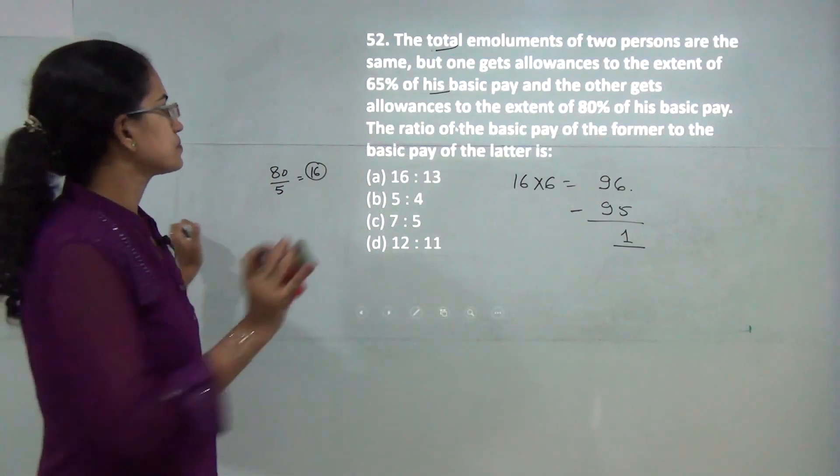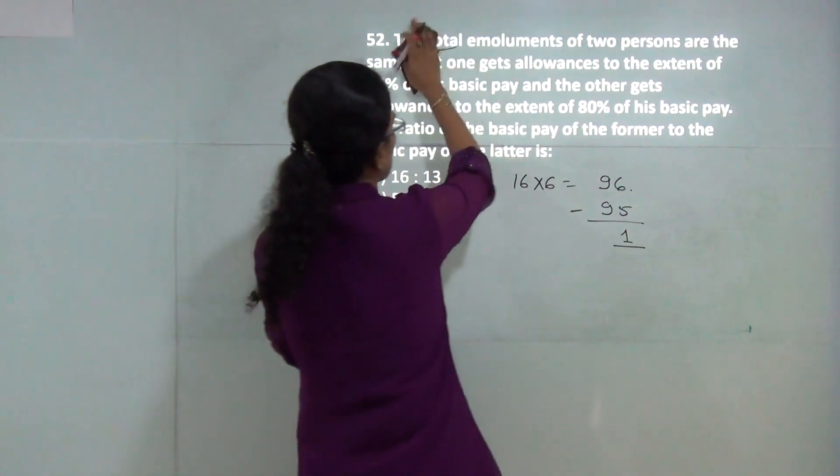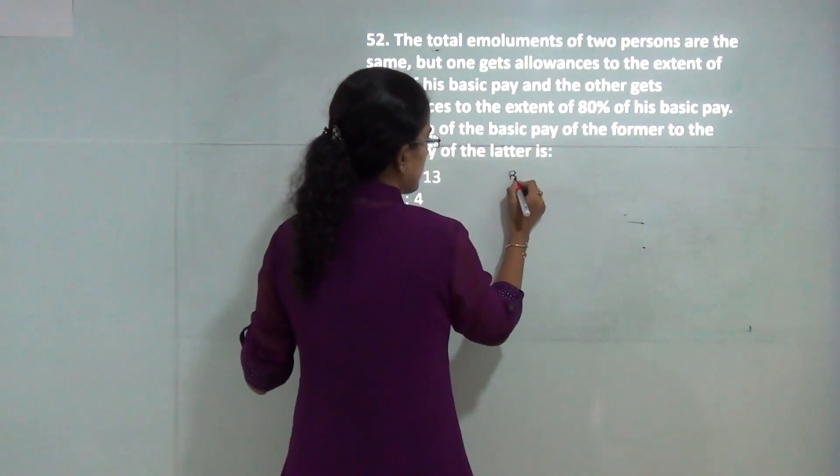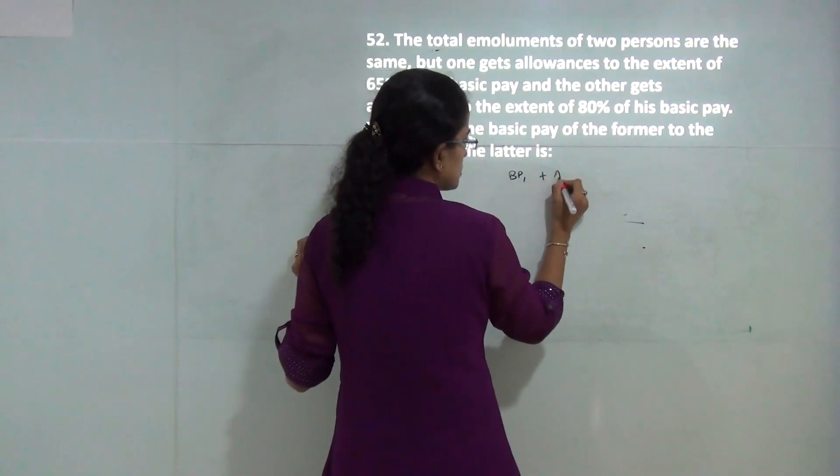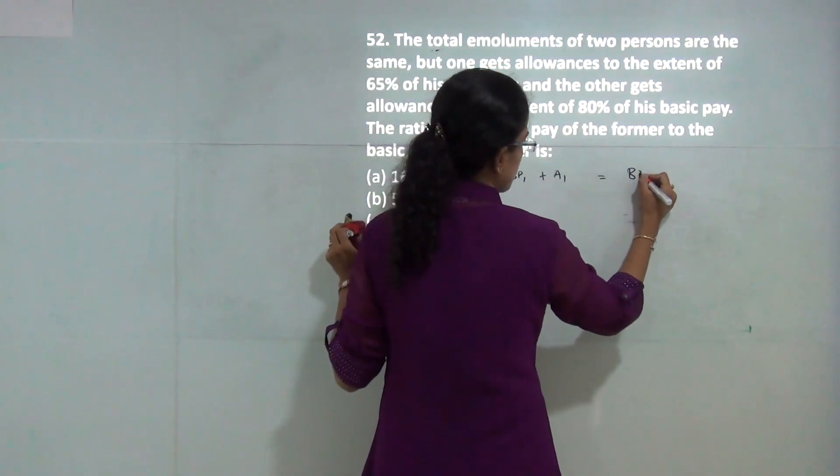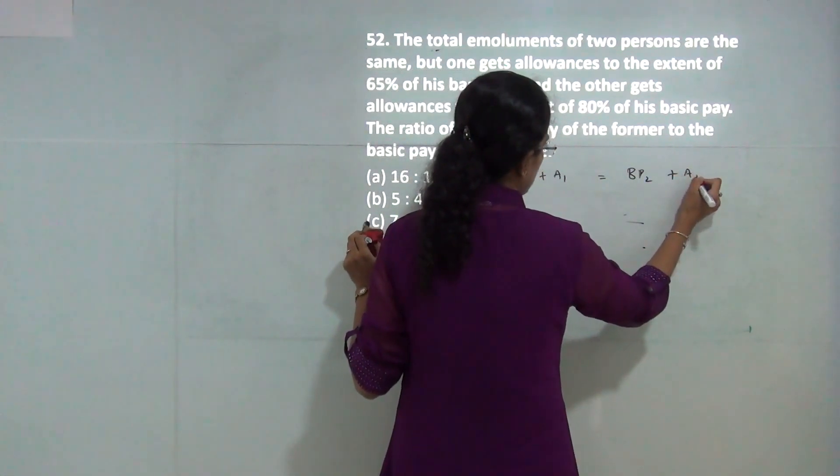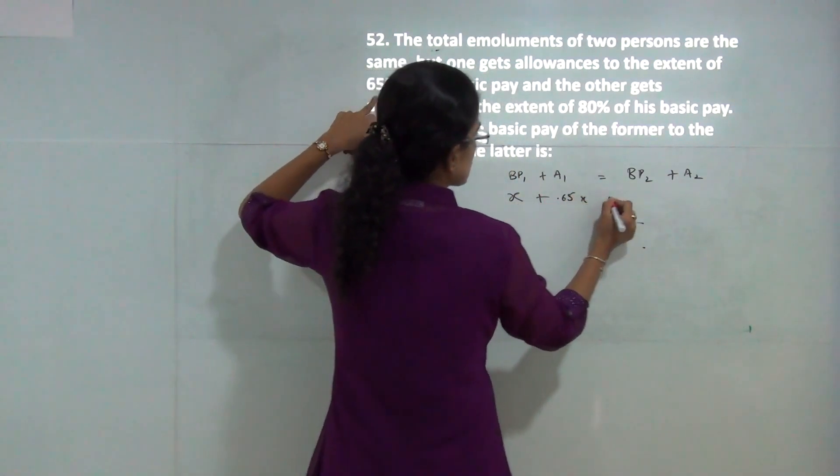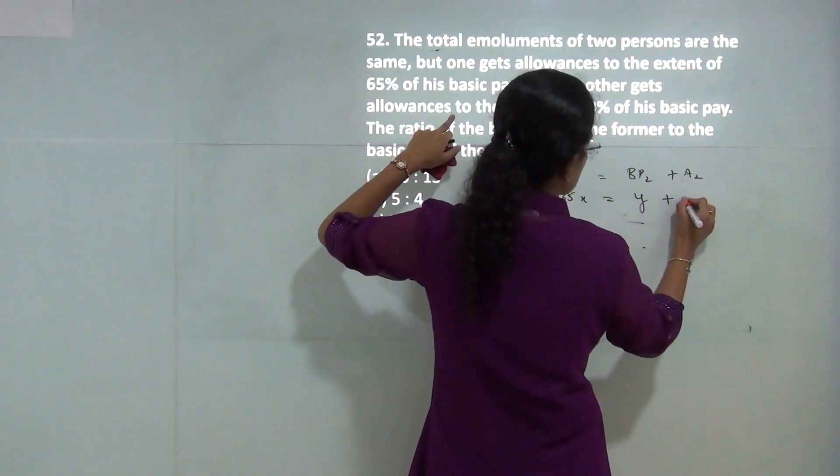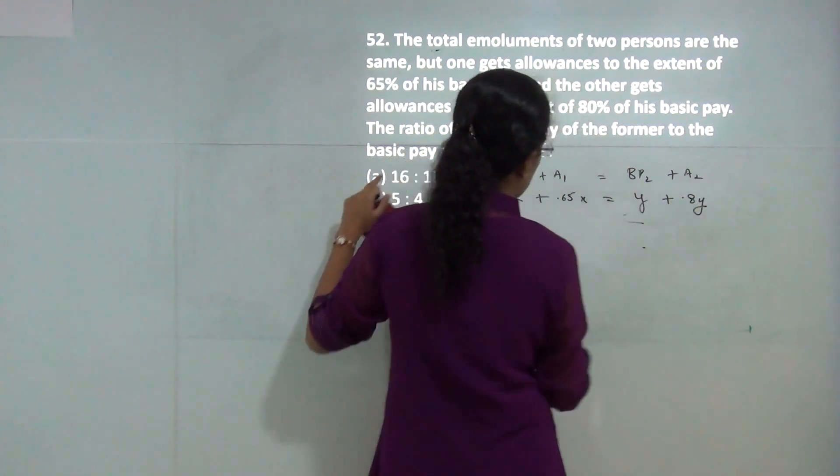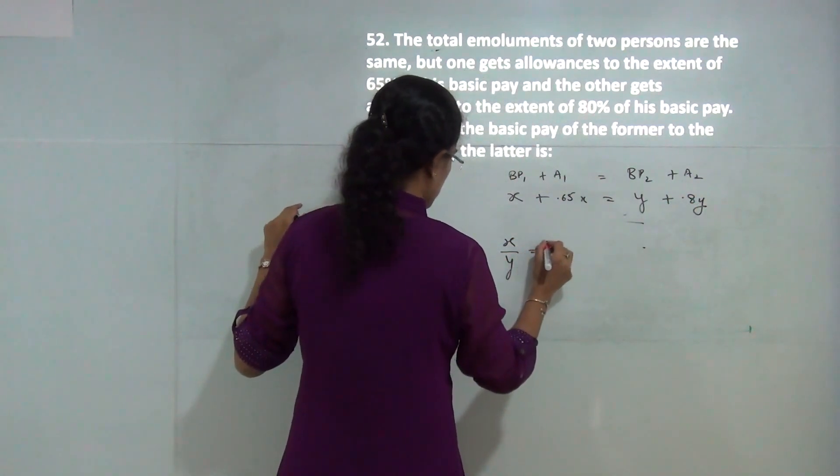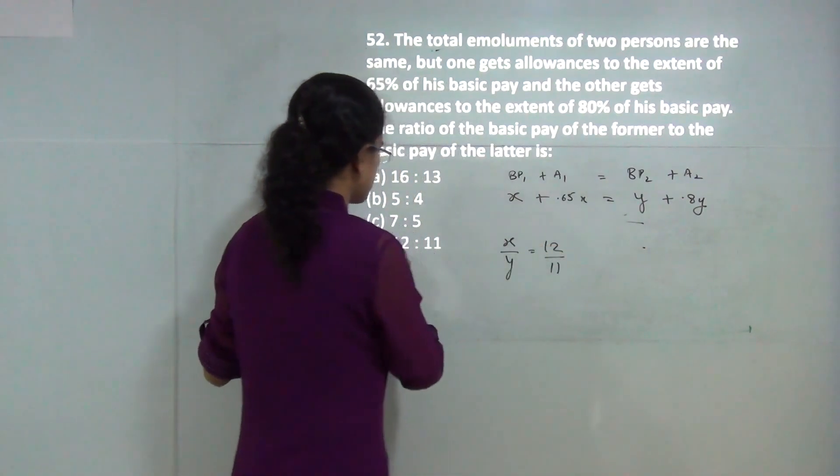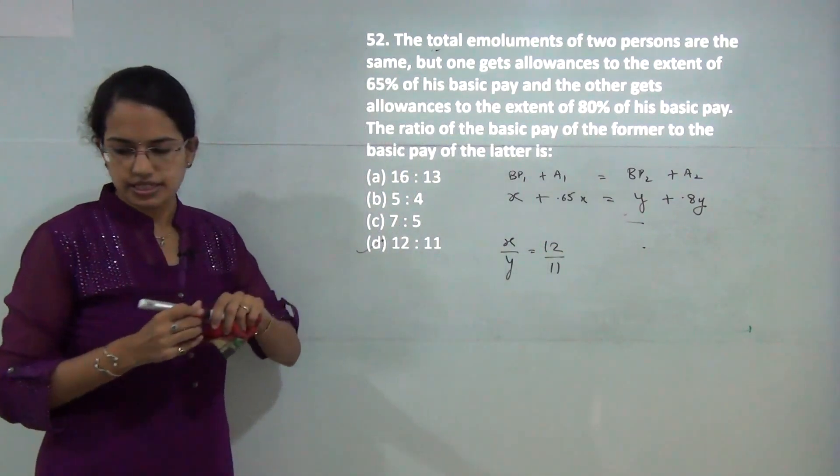Next question: the total amounts are the same, meaning basic pay plus allowance for one equals basic pay plus allowance for the second. So x plus 0.65x equals y plus 0.8y. When you solve, x by y equals 12 by 11. D is the correct answer.